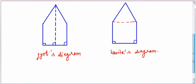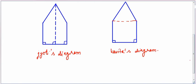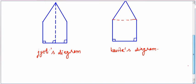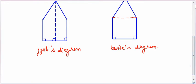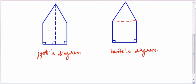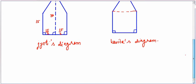Jyoti divided the figure into two congruent trapeziums. These two trapeziums are the same congruent figures. So we find the area of one trapezium and double it to get the area of the whole figure. The length of one parallel side is 15 upon 2, the other parallel side is 15 upon 2, the entire height is 30, one side length is 30, and the other parallel side is again 15 meters.